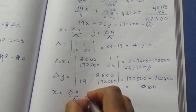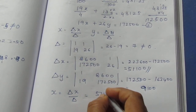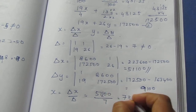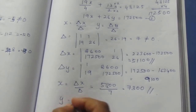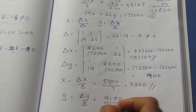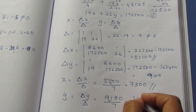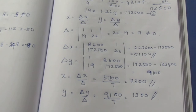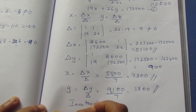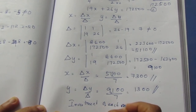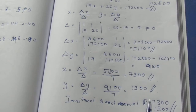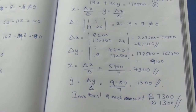So x value equals determinant-x divided by determinant: 51100 divided by 7. Seven sevens are forty-nine, sevens threes are twenty-one — x equals 7300. Y equals determinant-y divided by determinant: 9100 divided by 7 — sevens threes are twenty-one — y equals 1300. So the investment amounts are Rs. 7,300 at 4¾% and Rs. 1,300 at 6½%.